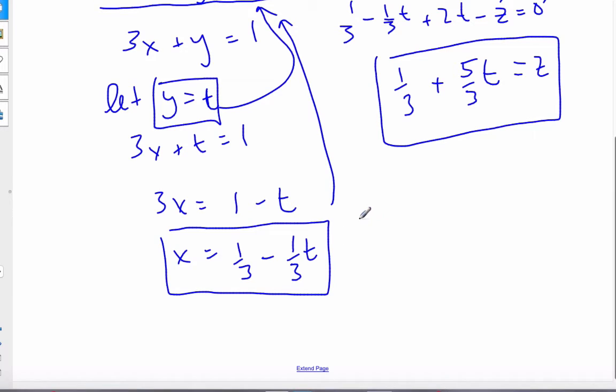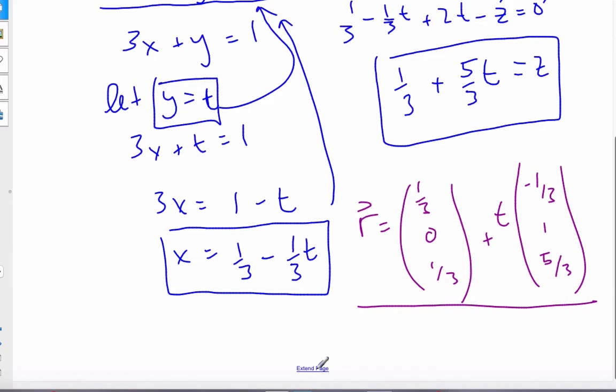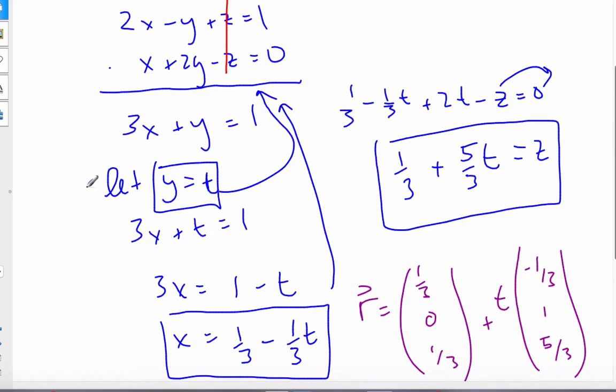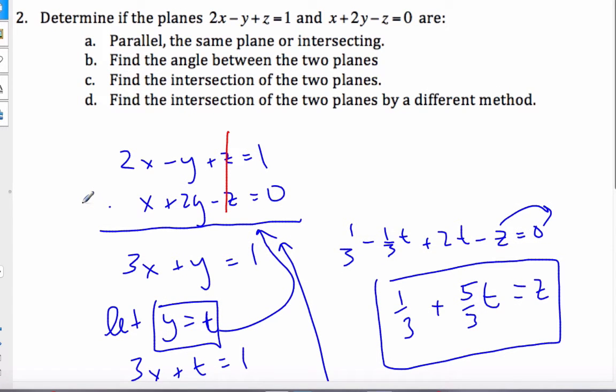When I put it all together, my equation of the line will be the point 1/3, 0, 1/3 plus some parameter t times -1/3, 1, 5/3. I could tidy up and multiply my direction vector by a scalar value, so I could say it's lambda -1, 3, 5. That is one particular method for finding the intersection of the two planes.